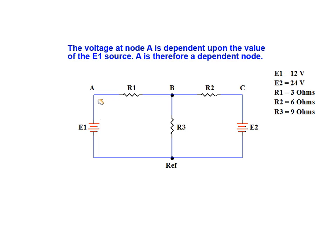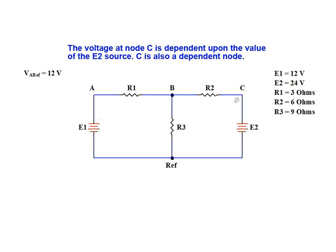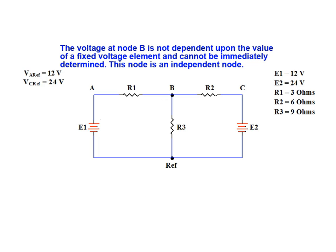The voltage at node A is dependent upon the value of the E1 source, so node A is therefore a dependent node. Similarly, the voltage at node C is dependent upon the value of the E2 source, meaning that C is also a dependent node. The voltage at node B is not dependent upon the value of any fixed voltage element and cannot therefore be known immediately. Node B is therefore considered to be an independent node.